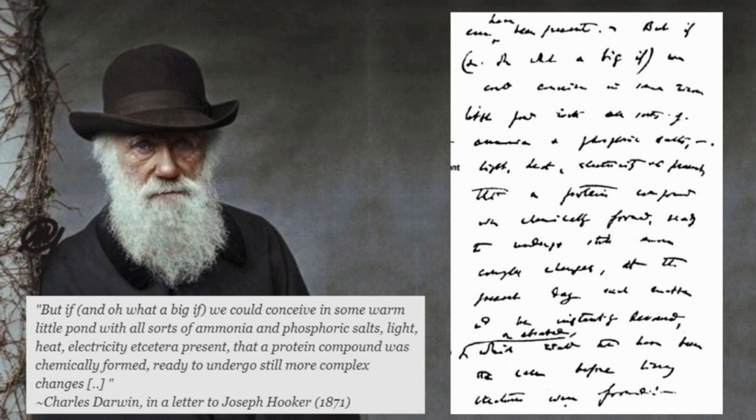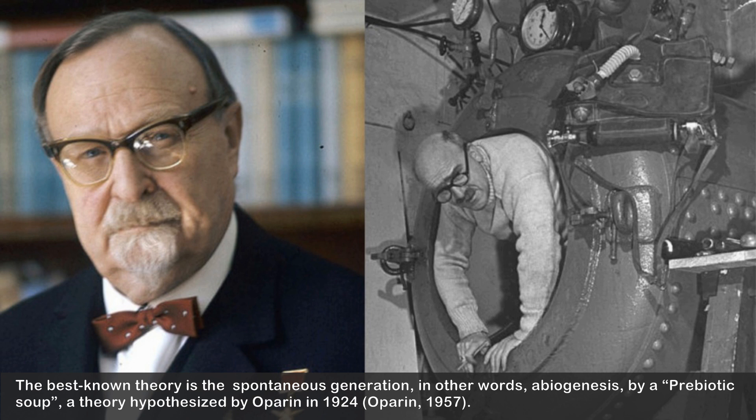In a letter to his friend G.D. Hooker, Darwin wrote in 1871: 'But if — and oh what a big if — we could conceive in some warm little pond, with all sorts of ammonia and phosphoric salts, light, heat, electricity, etc. present, that a protein compound was chemically formed ready to undergo still more complex changes.' The best-known theory is spontaneous generation, or abiogenesis, by a prebiotic soup.